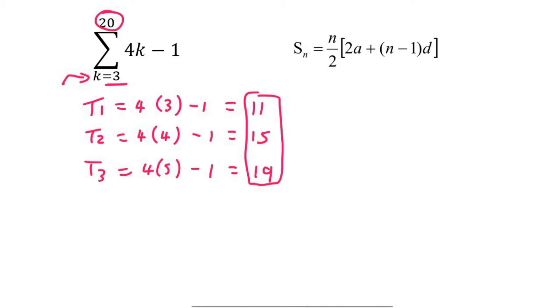This 20 is not the number of terms. Remember in the previous question we said that to work out the number of terms, it's the top number minus the bottom number, which in this case is a three, and then plus one.